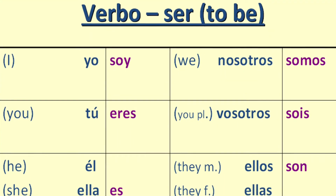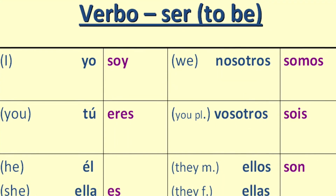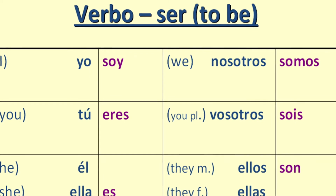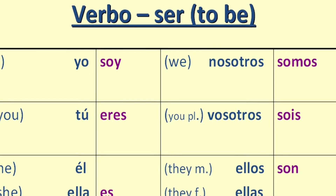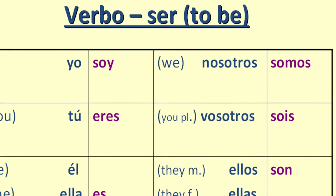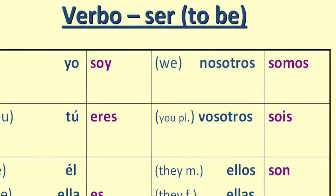If we're talking about our hair, it's singular, so we'll use es. If we're talking about our eyes, we've got two of them, so we need son.